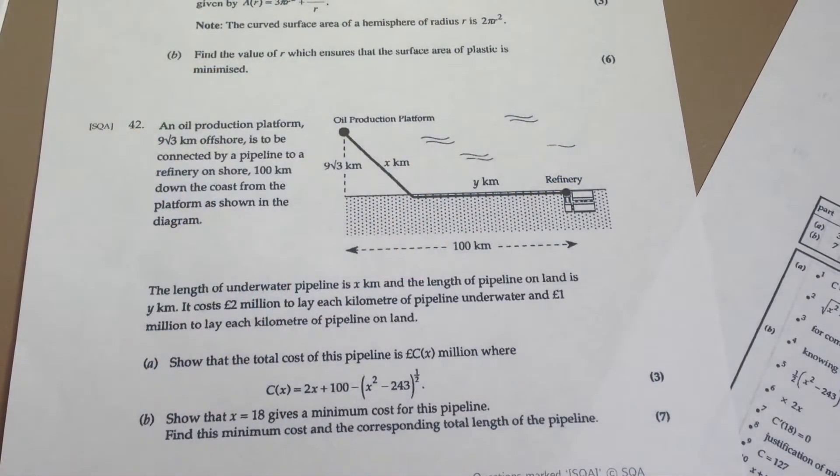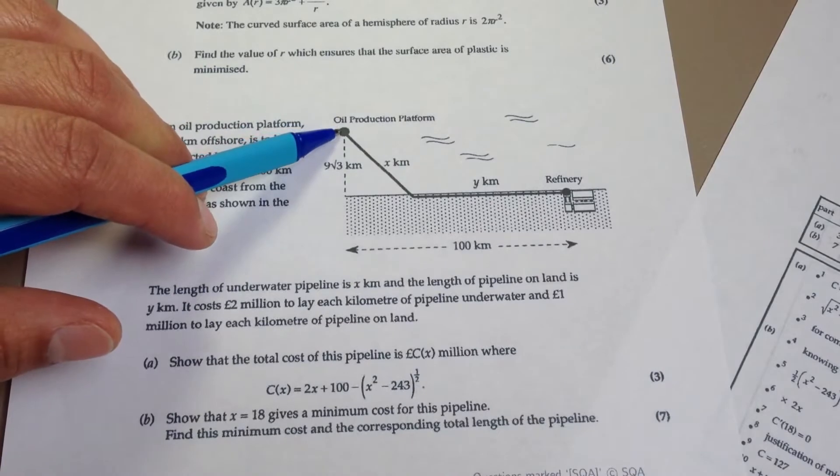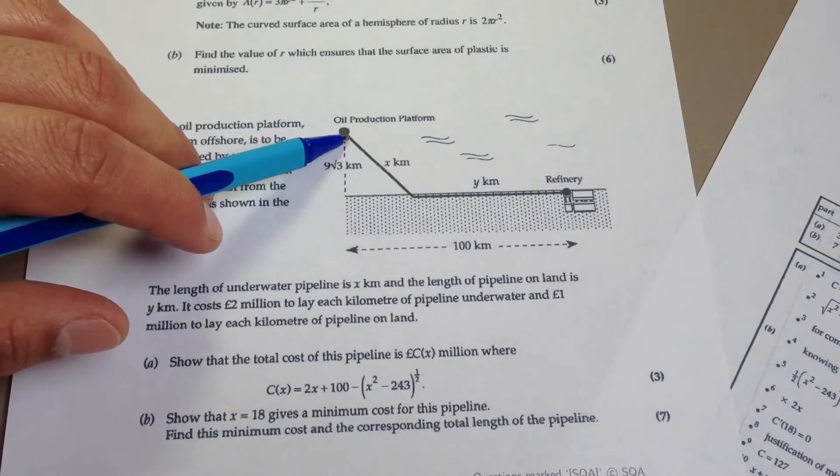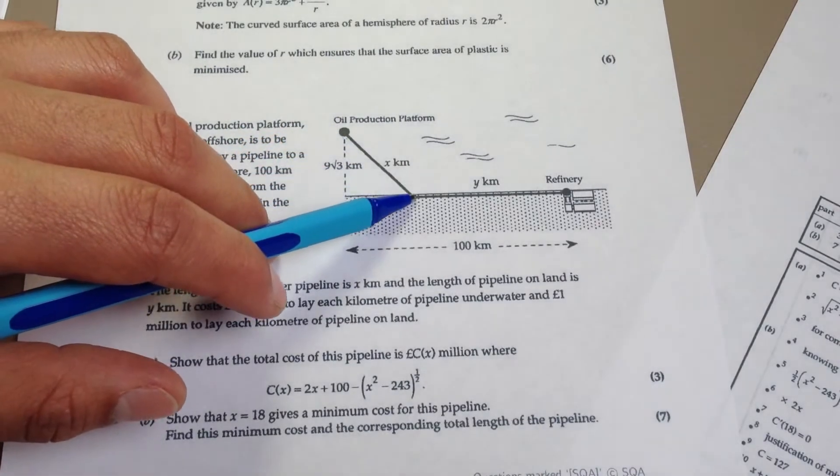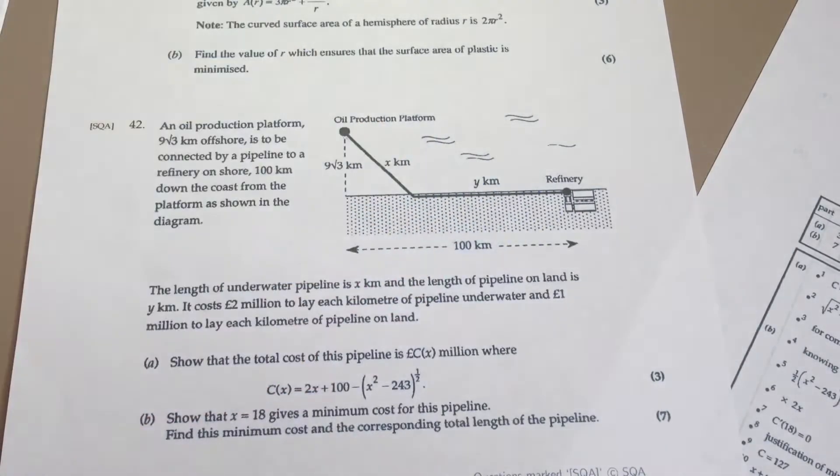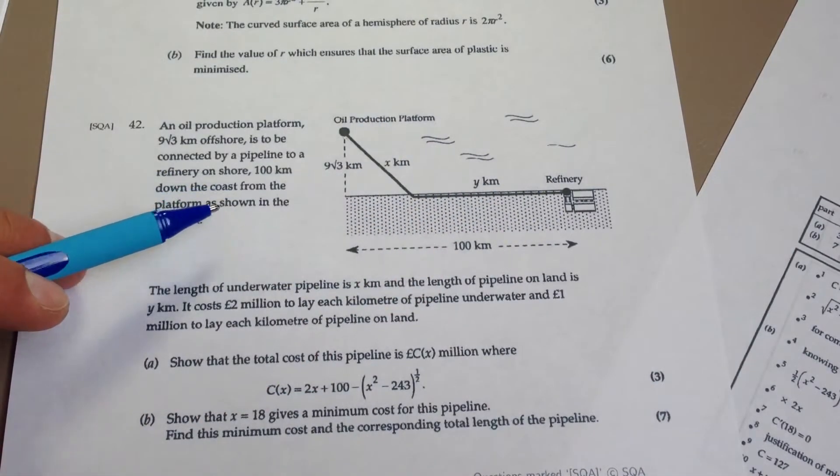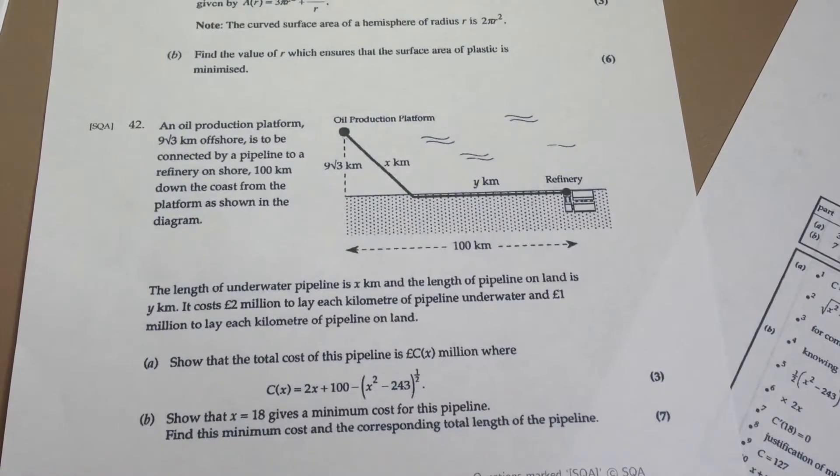So think of this as a bird's eye view looking down. You can see the oil production platform offshore there. The pipeline's running under the sea and then here it goes onto the land and into the refinery there. It's a hundred kilometers down the coast from the platform as shown in this diagram here. Now the length of underwater pipeline is x kilometers and the length of pipeline on land is y kilometers.